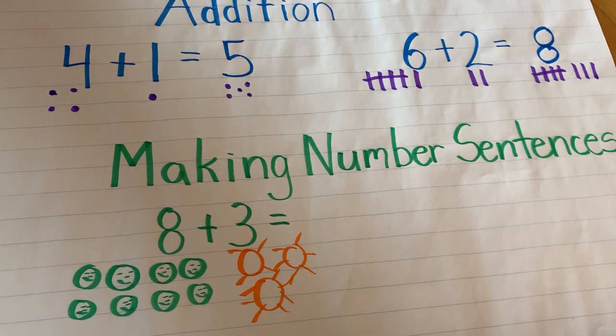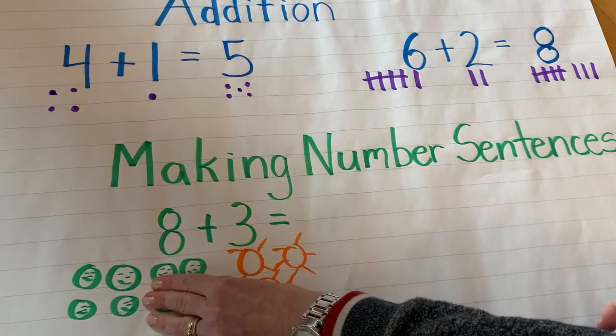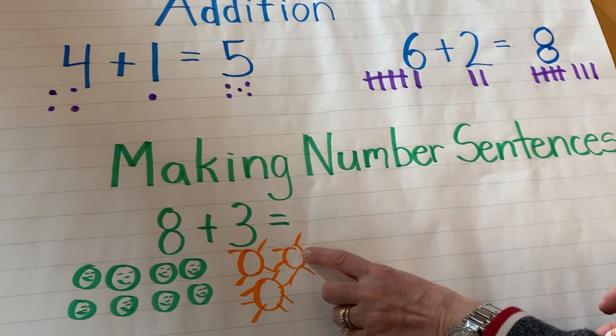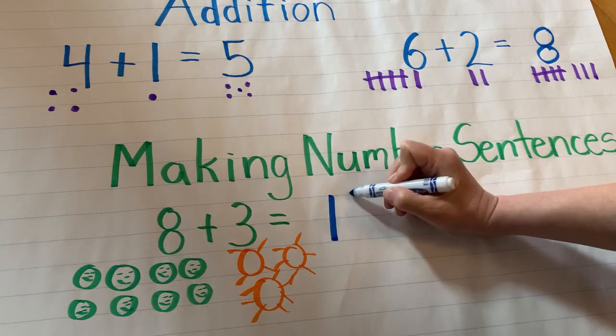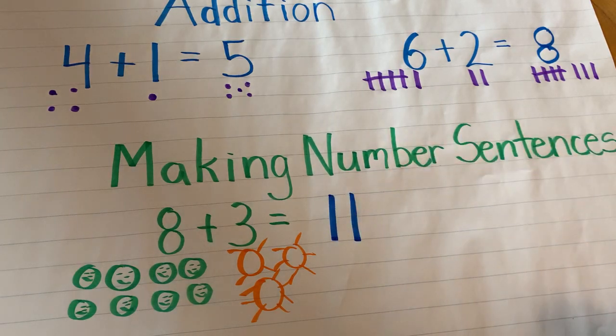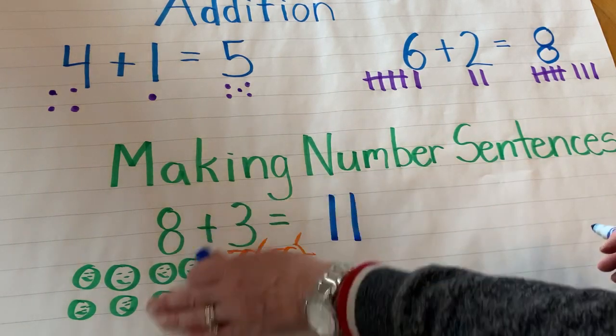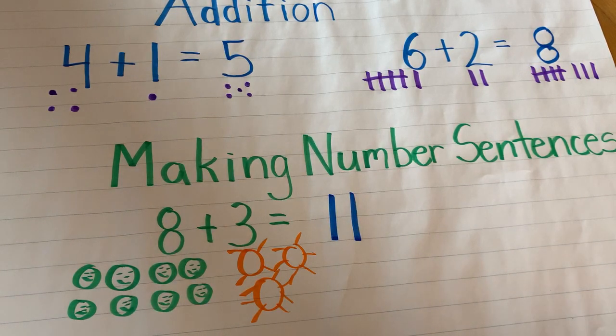So now I know there's 8. I don't have to recount them. 8, 9, 10, 11. So my total will be 11. So all together, I have 11 pictures.